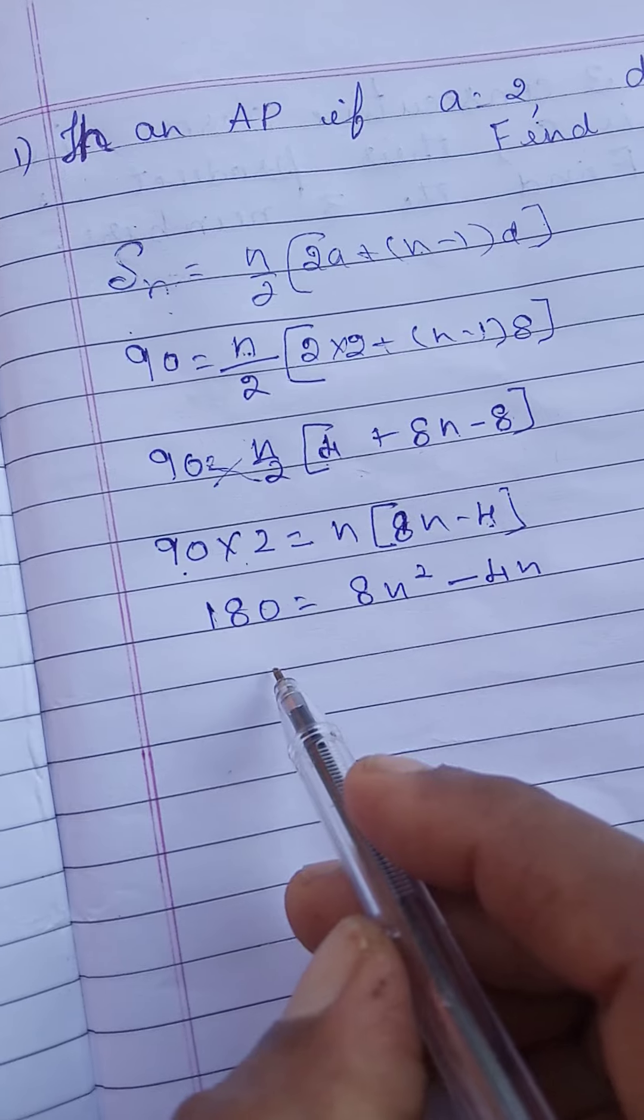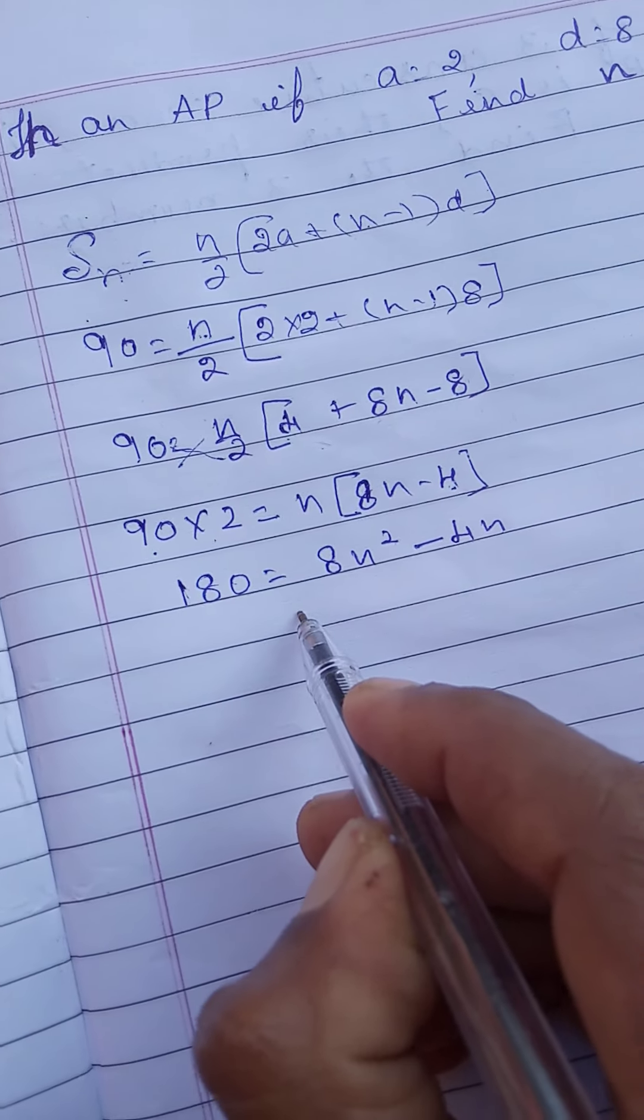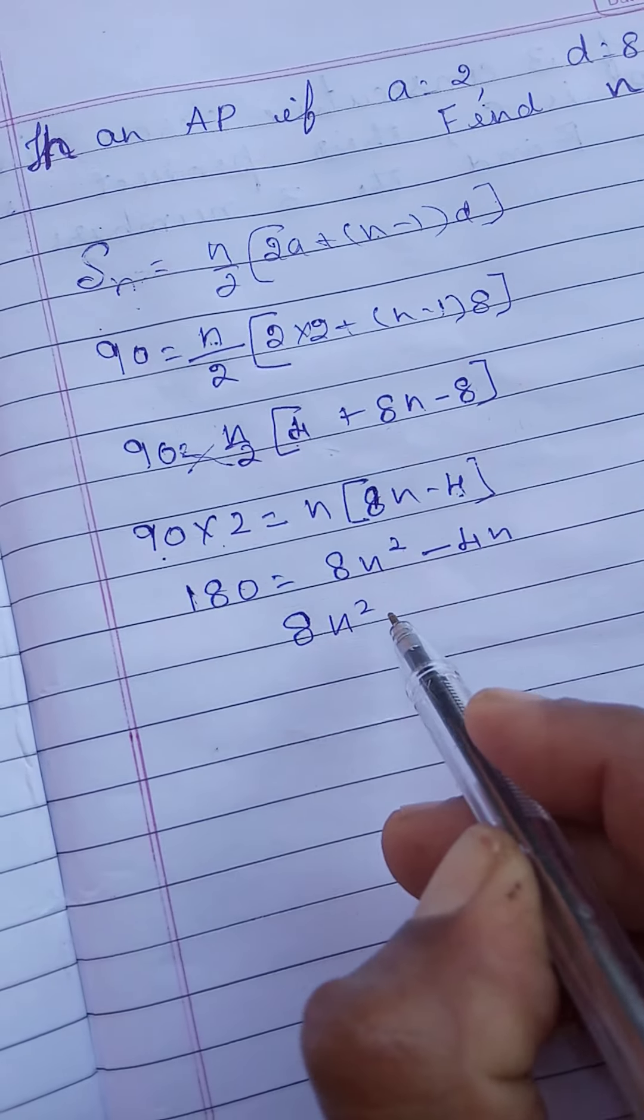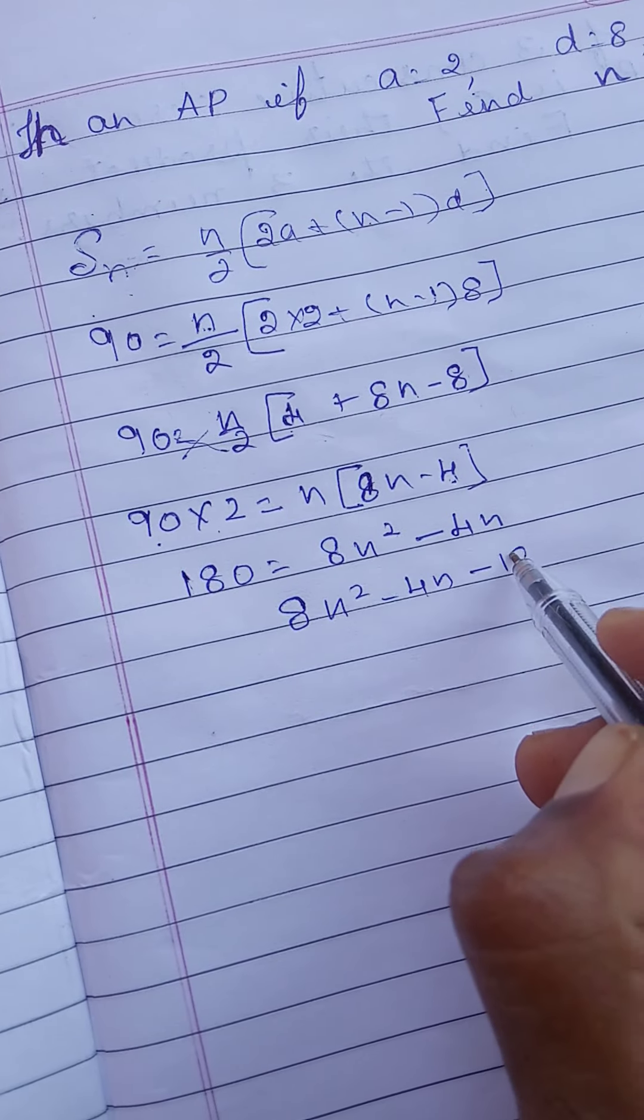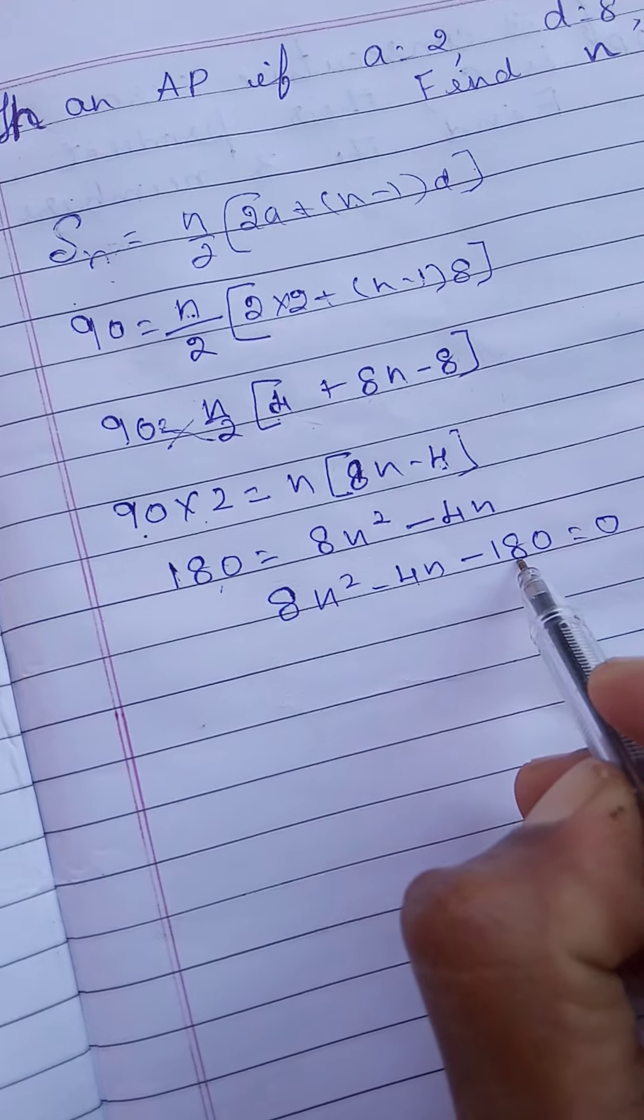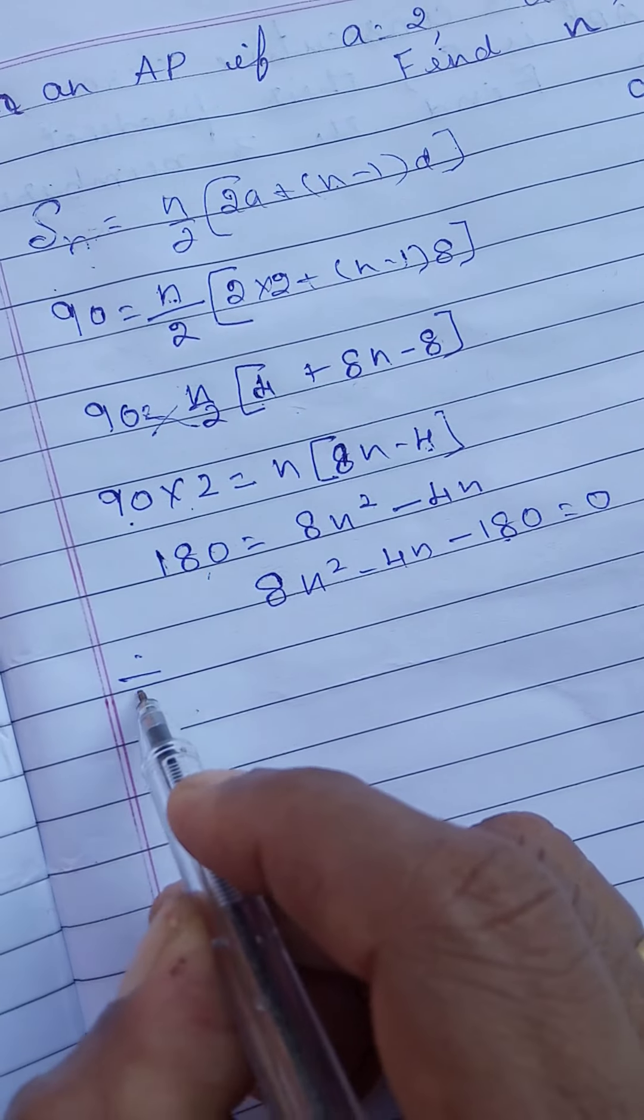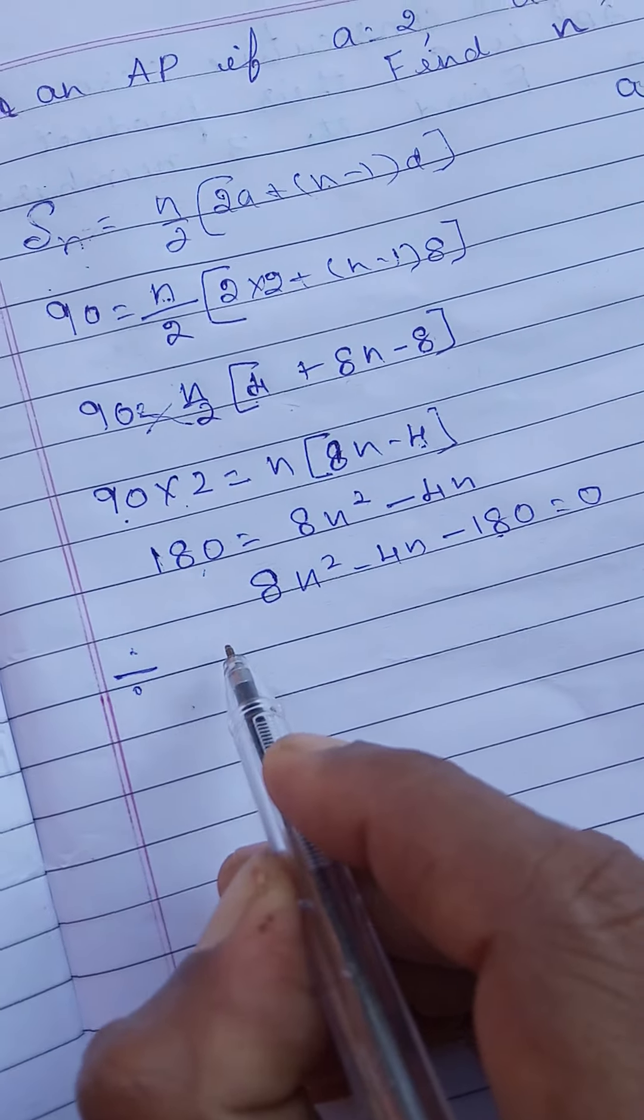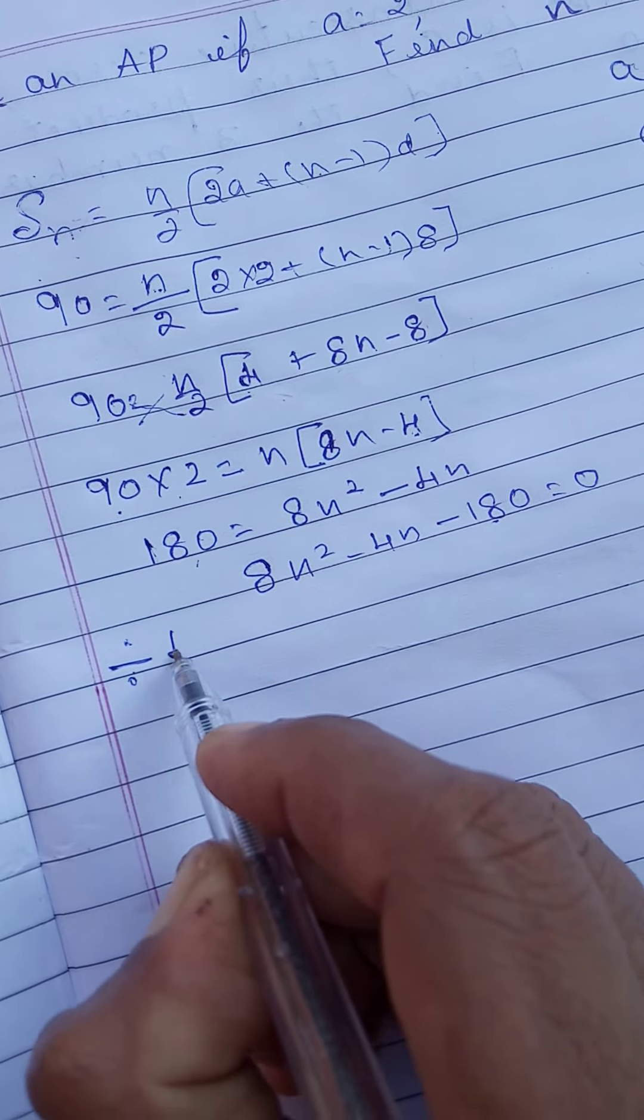Then we should write in a standard form of the quadratic equation. 8n square minus 4n minus 180 is equal to 0. This plus 180 becomes minus 180.